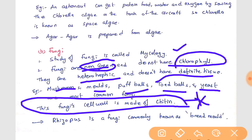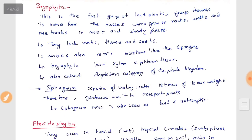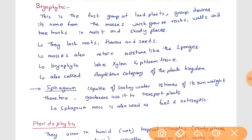Rhizopus is a fungus commonly known as bread mold. If a question asks what kind of fungi is seen on bread, the answer is rhizopus. The next classification is bryophyta — this is the first group of land plants, and the group derives its name from mosses.